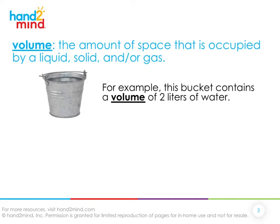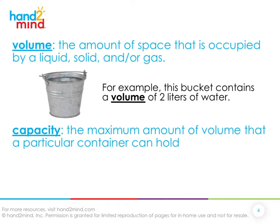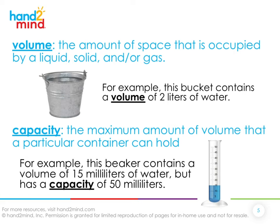No matter what shape this water is in, it will still always be the same volume of two liters. Another important word is capacity — the maximum amount of volume that a particular container can hold. For example, this beaker has a volume of 15 milliliters, but that's not its capacity. This beaker can hold up to 50 milliliters, so it has a capacity of 50 milliliters. If something is all the way full, then its volume equals its capacity. If not, the volume is less than the capacity.